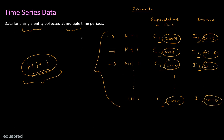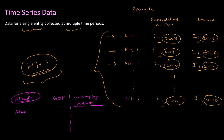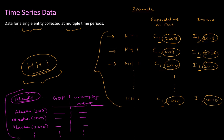We can take one more example. We can collect data on Alaska at multiple time periods — that would also be time series data. We have two columns: GDP and unemployment. We collect data on Alaska for 2008, then 2009, then 2010, and so on. The entity is Alaska — a single entity — and we have data on it at multiple time periods.